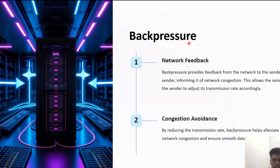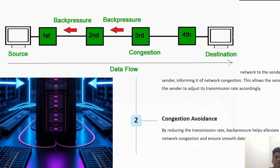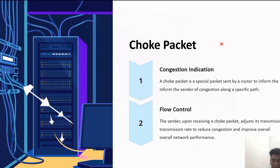It provides quality of service by controlling the number of new connections being established, ensuring the desired quality of service for existing users. Back pressure is a type of closed loop congestion control mechanism that tries to remove congestion after it happens. It is a node-to-node congestion control that starts with the node and propagates in the opposite direction of data flow.